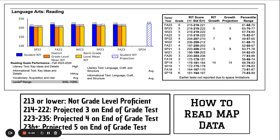Hi everyone. This is a quick video on how to read your child's MAP data. MAP stands for Measure of Academic Progress. Your child takes this test three times per year. They've already taken the fall 2023 test as this video is being made, and they will take it again in January for the winter test and then in April for the spring test. It's measuring to see if your child is actually growing within their grade level.